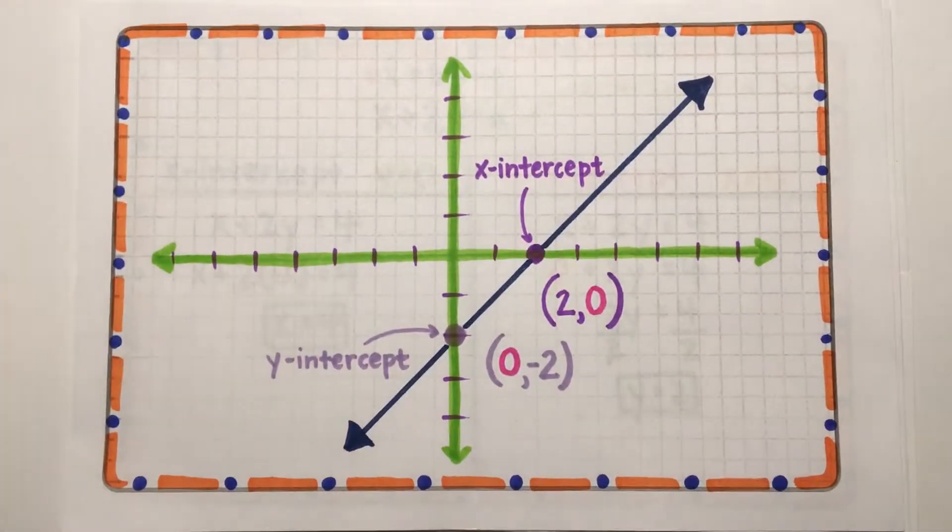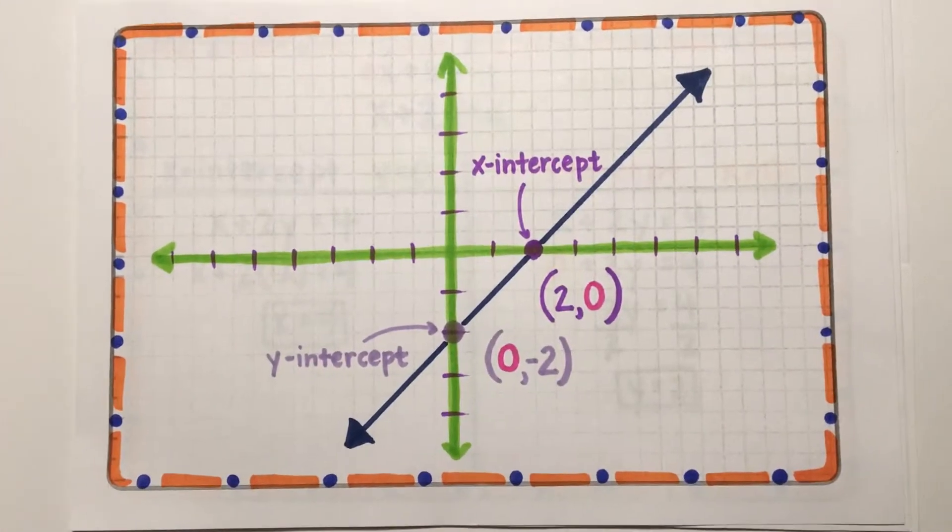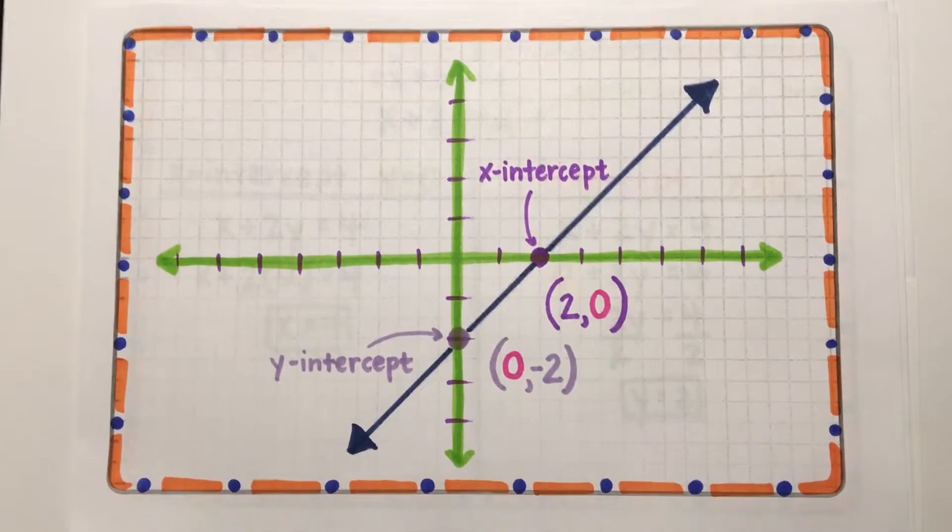You already learned what an x and y-intercept is. An x-intercept is where the graph crosses the x-axis, and the y-intercept is where the graph crosses the y-axis. Easy stuff.